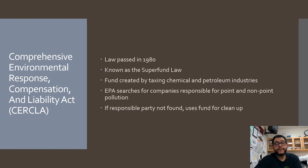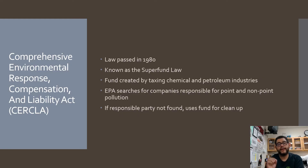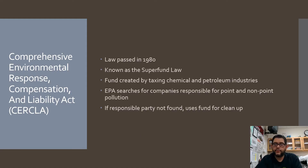Then we have CERCLA. This one is going to be the Superfund law. Basically it's a tax on companies that produce toxic waste. The idea is that if there is a toxic waste site where we can't say whose fault it is, the Superfund taxes other companies so that the government has money to clean it up. A classic case of this is Love Canal — we knew whose fault it was, but legally there was no one to clean it up. So this law was passed so that places with toxic waste that had no one really responsible could be cleaned up. If a site is labeled a Superfund site, this fund pays for the cleanup and research.